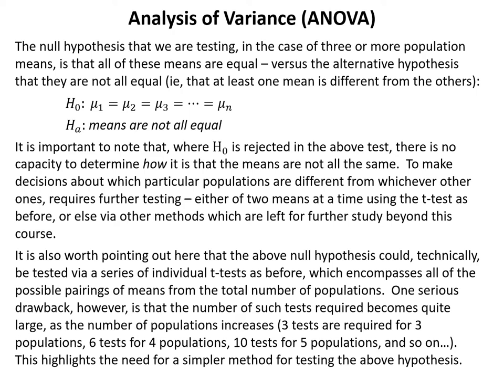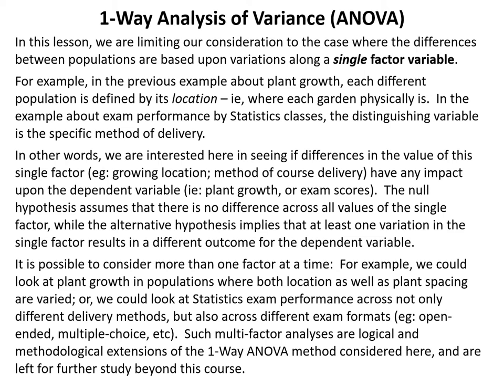The null hypothesis could technically be tested via a series of individual t-tests covering all possible pairings of means. However, a serious drawback is that the number of tests required becomes quite large as the number of populations increases — three tests for three populations, six for four, ten for five, and so on. This highlights the need for a simpler method.